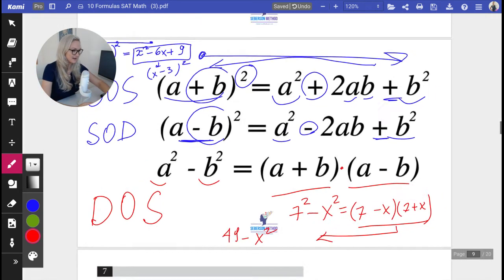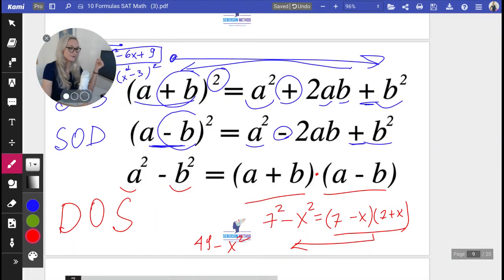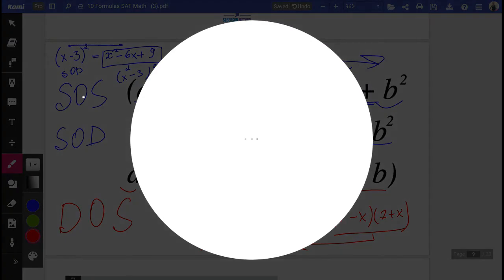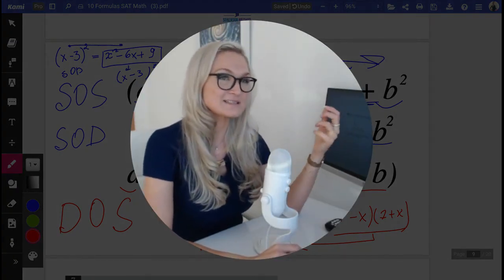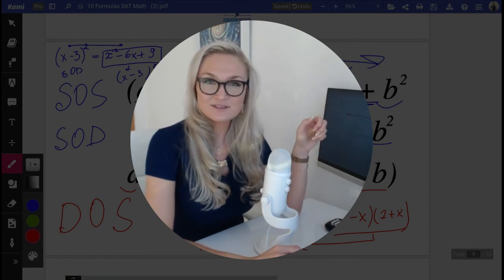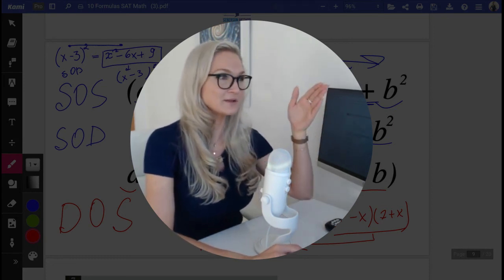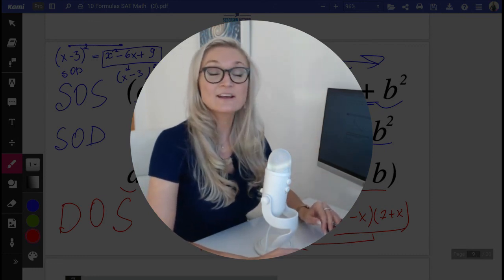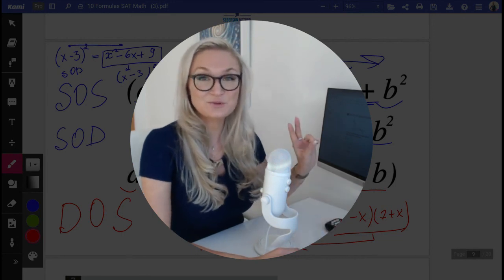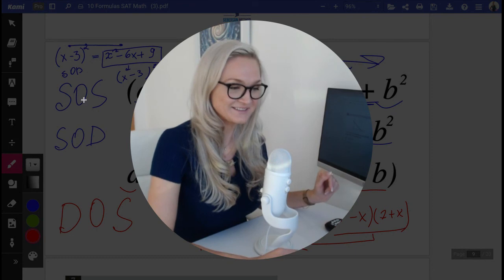Hope this video helped you guys to remember these quadratic identities. These are just my codes that I use with my clients. When we see a problem that has to do with identities, I always ask them, is this SOS, SOD, or DOS. You don't have to use this as long as you can commit them to memory and as long as you know how to go from left to right and from right to left. And in the next video, we're going to do two hard problems that are involving these identities. I'll see you in the next video.